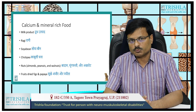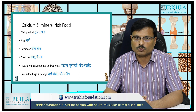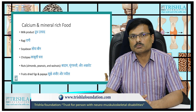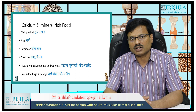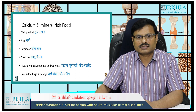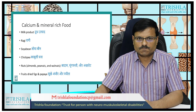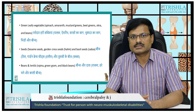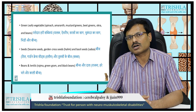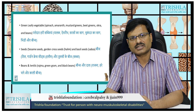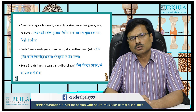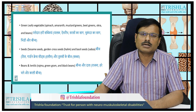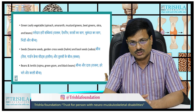Calcium-rich food products include milk products such as curd, milk, ragi, soybean, chickpea, nuts like almonds, peanuts, and walnuts, dried figs, papaya, and green leafy vegetables like spinach, amaranth, mustard greens, beet greens, okra, and beans. Seeds such as garden cress seeds, basil seeds, and legumes like rajma, green gram, and black beans are all high in calcium.